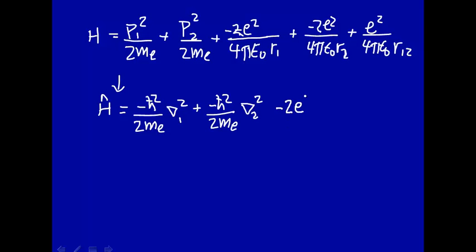Minus 2e² over 4πε₀r₁, minus 2e² over 4πε₀r₂, plus e² over 4πε₀r₁₂.